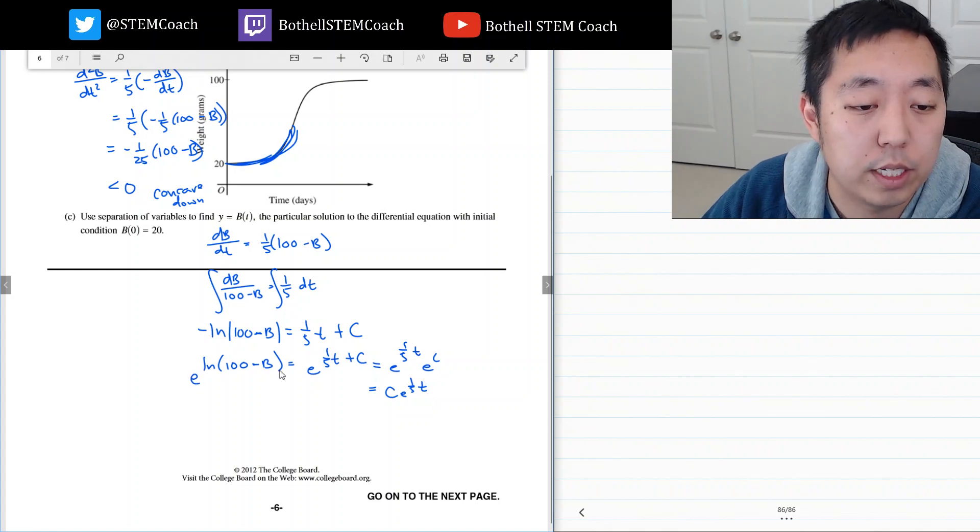Oh, I forgot I was doing e to both sides, that's why I did that. So this is equal to 100 minus b. Then b is equal to 100 minus c times e to the one-fifth t.